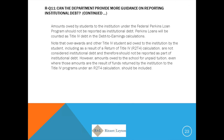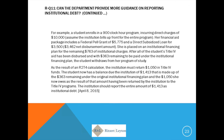The department provided further guidance on institutional debt: it is the amount outstanding as of the date the student completes or withdraws on any other credit, including unpaid charges. This can include library fees, graduation fees, overdraw fees, laboratory fees, etc. Any amount owed to the institution for tuition, fees, and institutional charges will be considered institutional debt — any amount owed after that completion or withdrawal date.